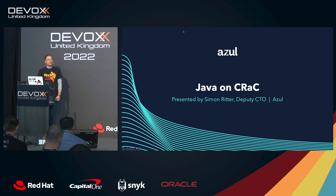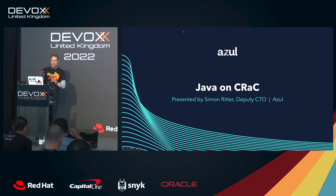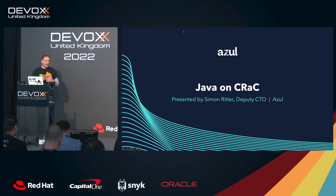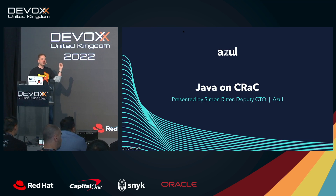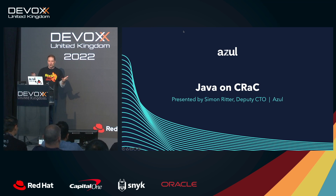Good afternoon. Welcome to Java on Crack. The marketing department might need to look at the naming and come up with something slightly better. The idea is to look at how we can improve the startup time of applications. CRAC stands for Coordinated Restore at Checkpoint. My name is Simon Ritter. I work for Azul.